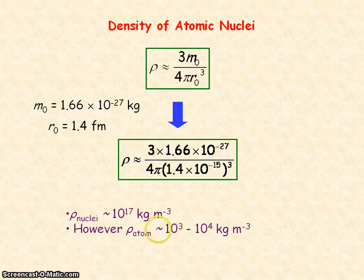Density of atoms, however, is about 10 to the 3, 10 to the 4 kilograms per metre cubed. So this shows that the atom is mostly empty space and the nucleus is extremely dense.